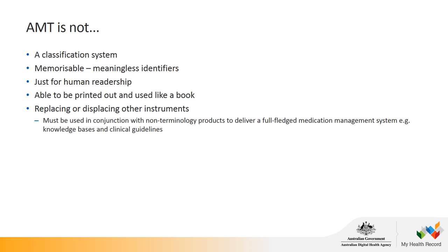Just some things to note. AMT is not a classification system — it has a polyhierarchical structure instead and uses meaningless identifiers linked to a concept. The identifiers uniquely identify a concept so it can be processed by a computer system. AMT is not able to be printed and used as a reference book, and shouldn't replace or displace other instruments — it should be used in conjunction with non-terminology products to deliver a medication management system. It can be linked with knowledge bases and clinical guidelines to help develop clinical decision support, but it doesn't replace any of that.